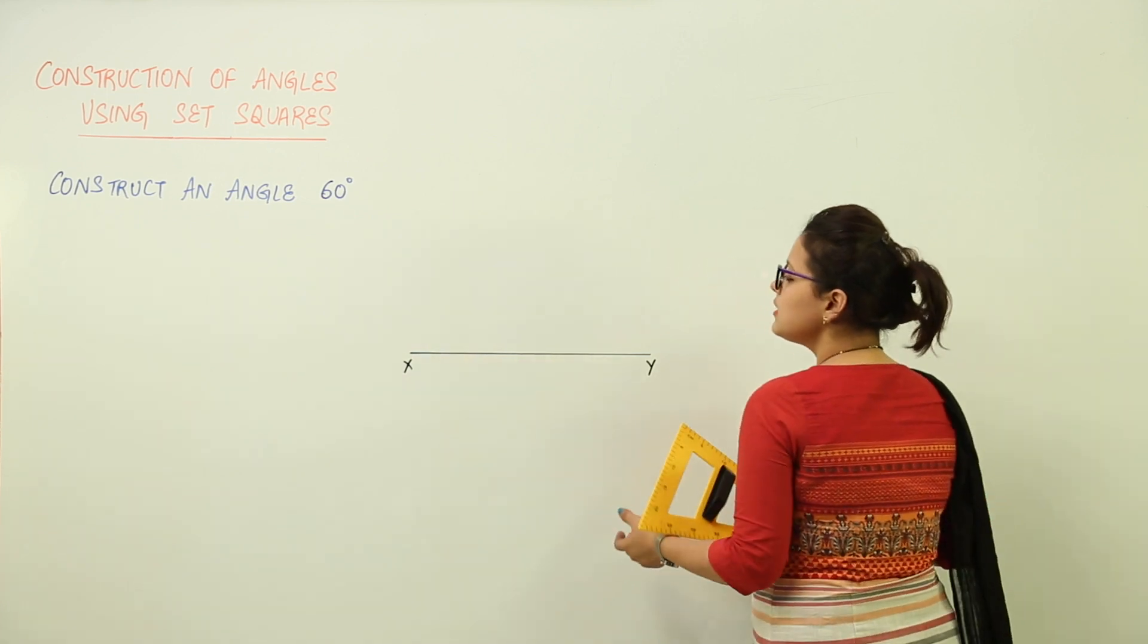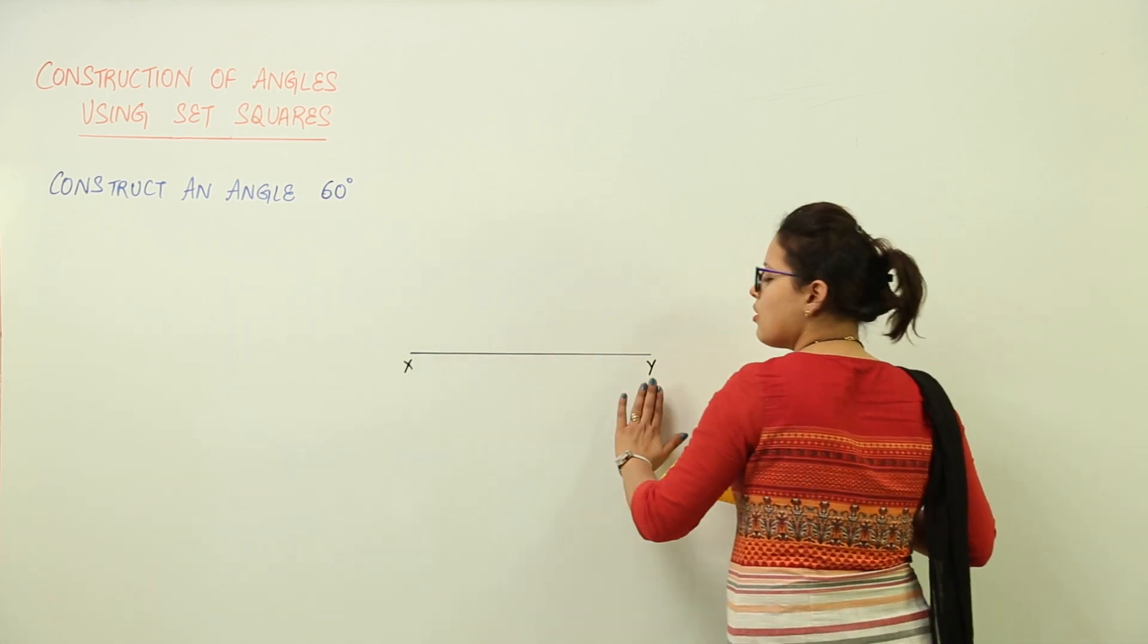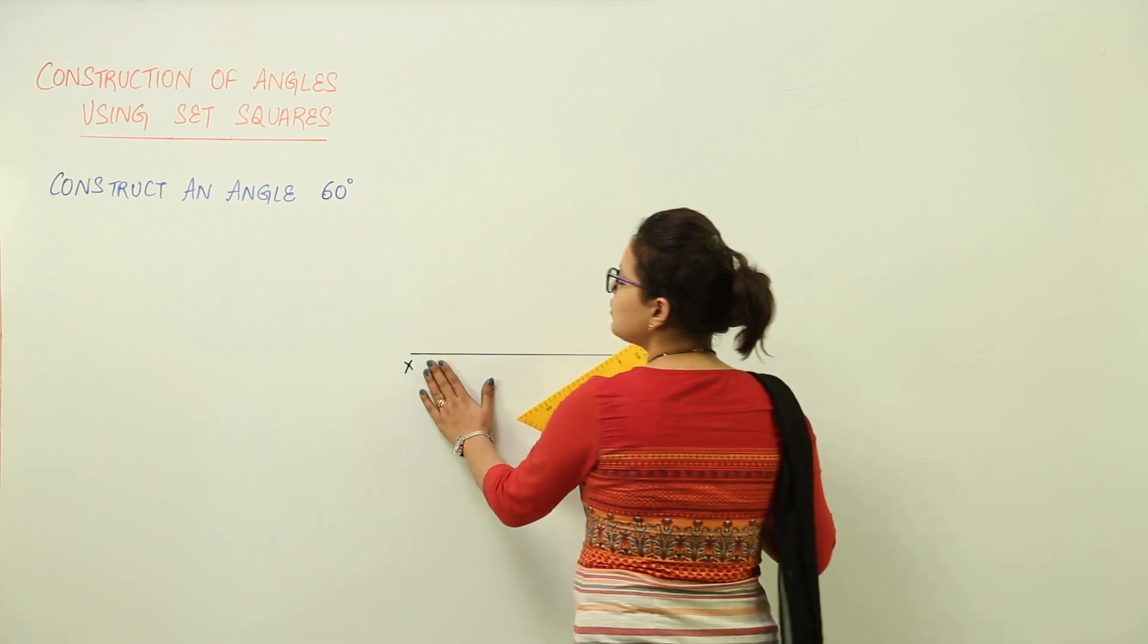Now, where are you making 60 degrees? Either on X or on Y. I am making it on X.